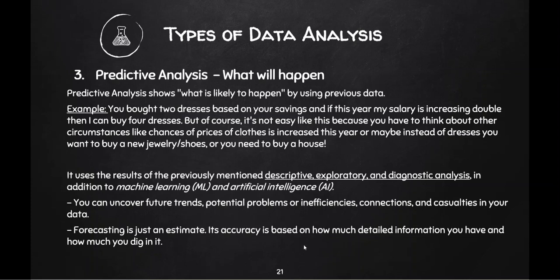You measure accuracy on forecasting because you have forecasted predictions. It's just an estimation, and then in real life you see whether it happened or not. For example, if you predicted 2 rainy days and both happened, you are 100% accurate. But if only 1 day happened, your accuracy is 50% — one out of two. This is the same concept we perform in predictive analysis.